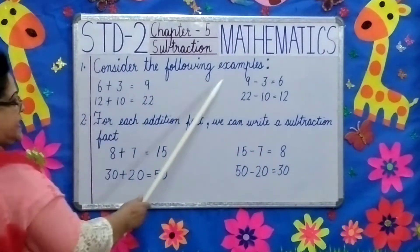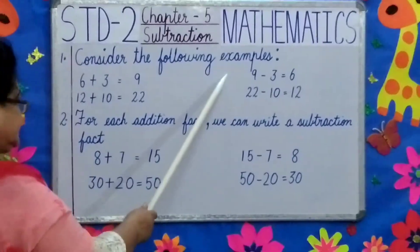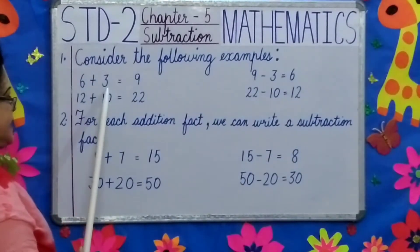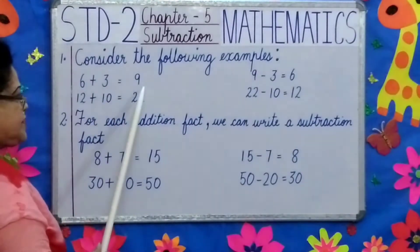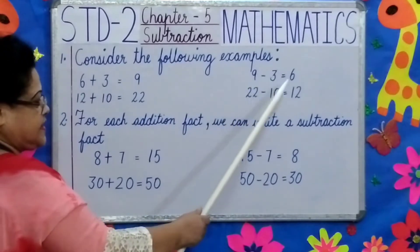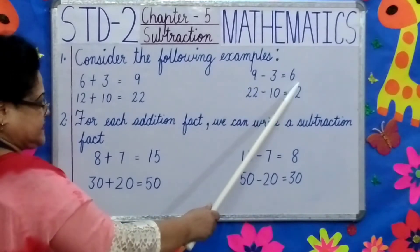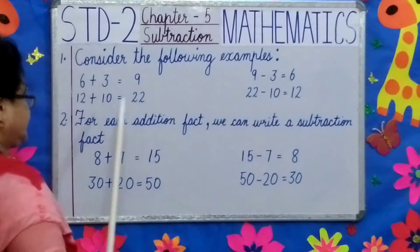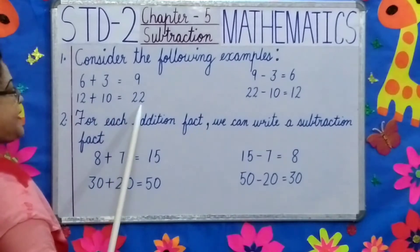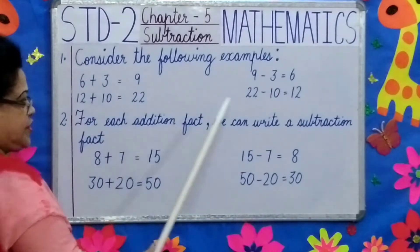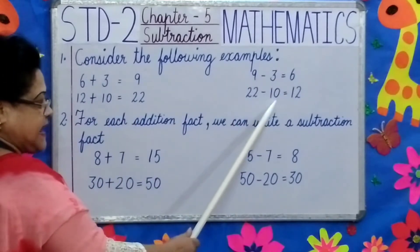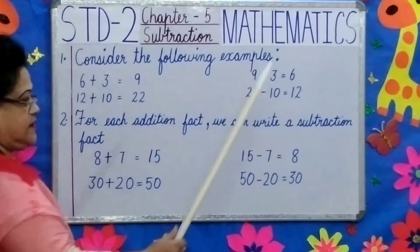Consider the following examples. 6 plus 3 equals 9. 9 minus 3 equals 6. 12 plus 10 equals 22. 22 minus 10 equals 12.